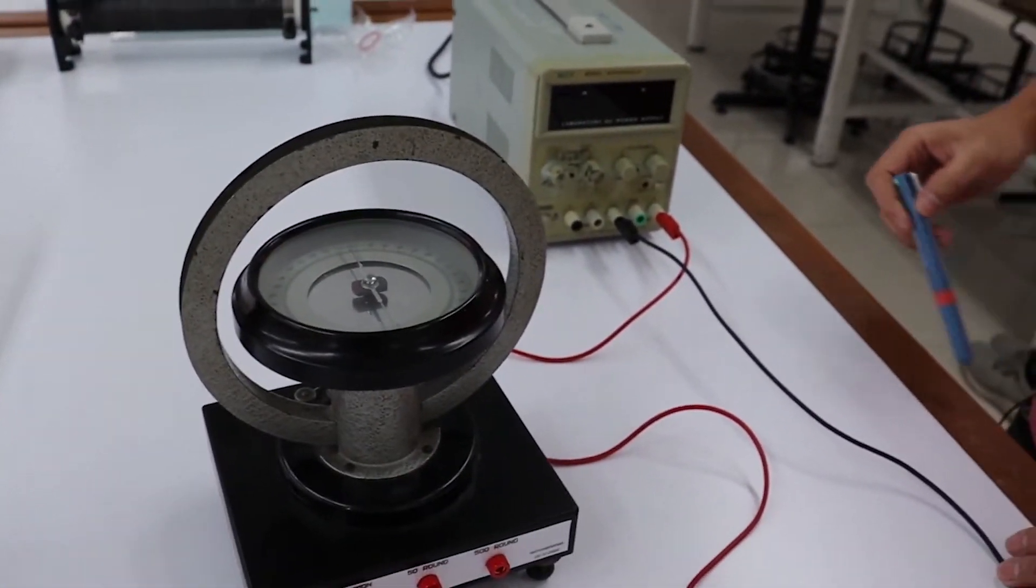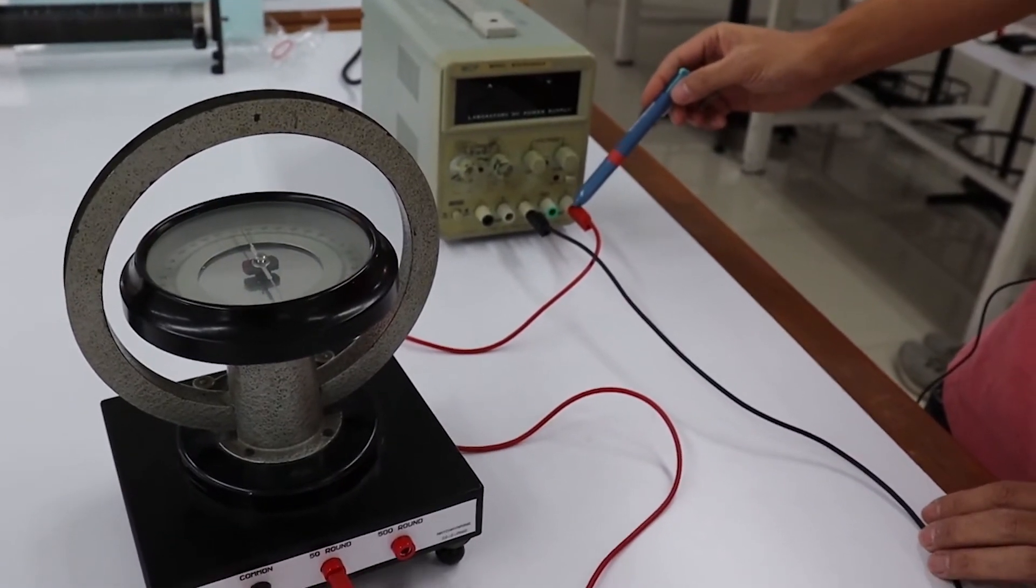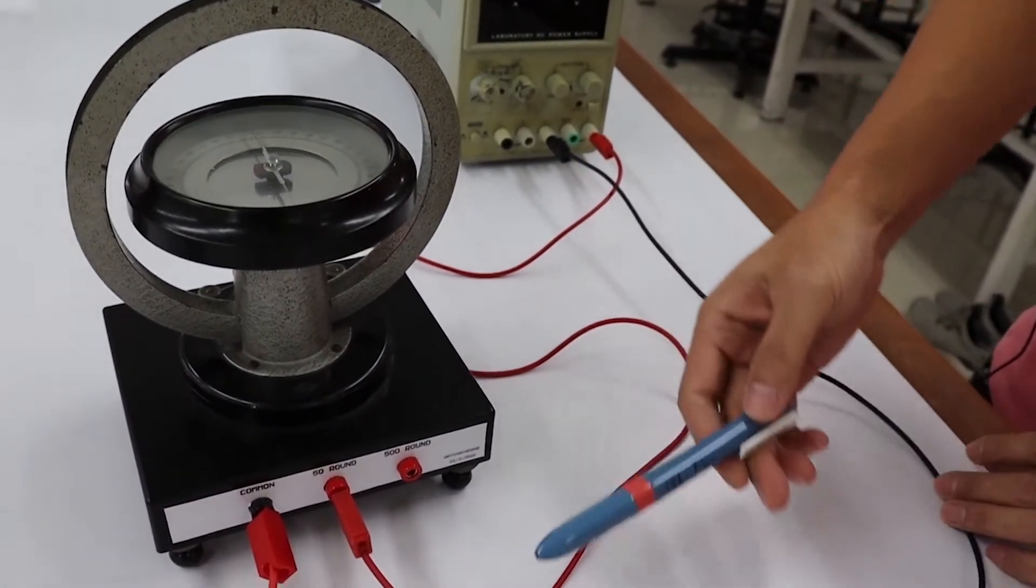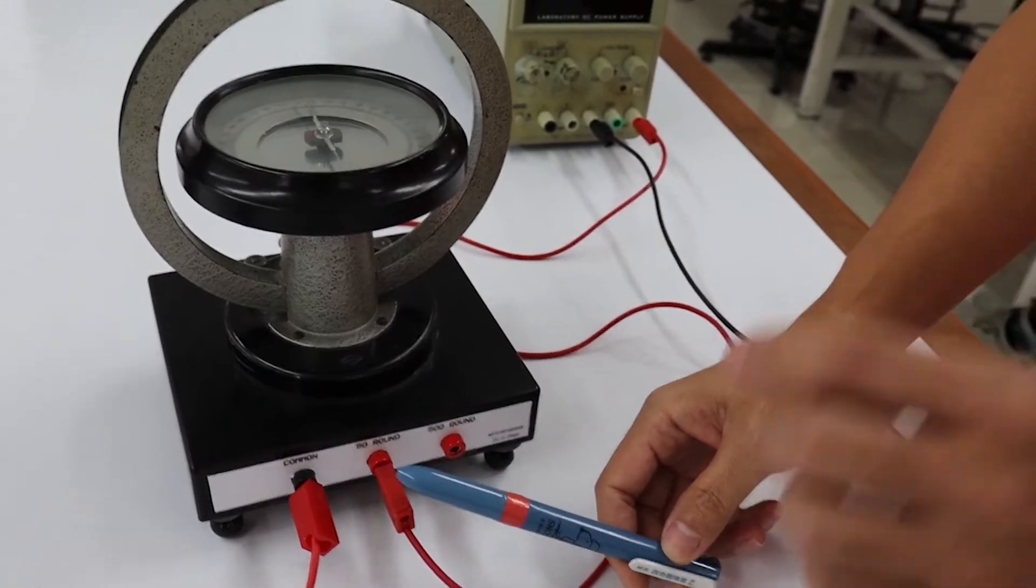This is how to set the magnetic field from the coil and the Earth to be perpendicular to each other. Then we will connect the circuit. The positive red wire from the power supply will connect to red terminal of galvanometer, that firstly 50 turns terminal.